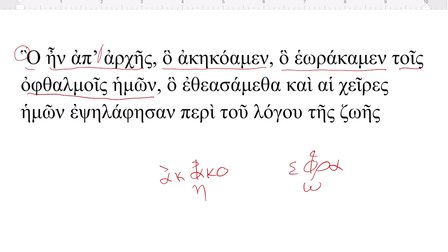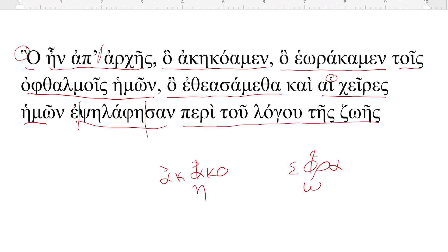Then here's your dative phrase — datives are 'to, by, in, or with,' so context should be 'with': 'what we have seen with our eyes.' Then another relative clause, this one's a little more complicated: 'what' — then it's θεάομαι, so 'what we have seen.' Now what's this word right here? You notice it has a rough breathing but no accent, so it can't be a relative pronoun — it is the article. 'And the hands of us have touched' — so it's a simple formation, ψηλαφάω, 'to touch,' concerning the word of life.